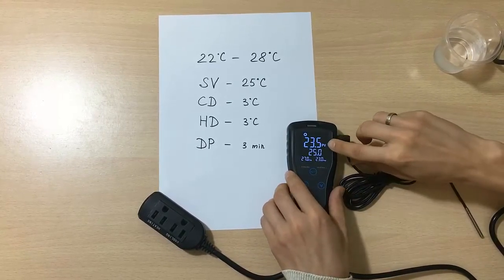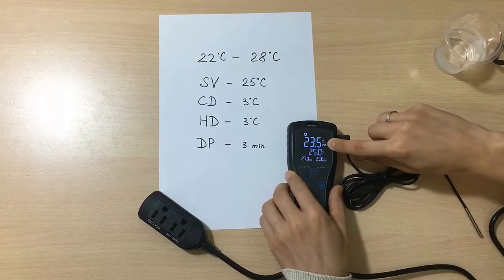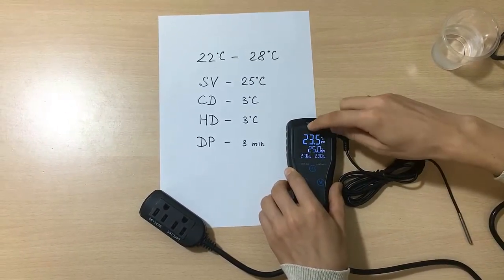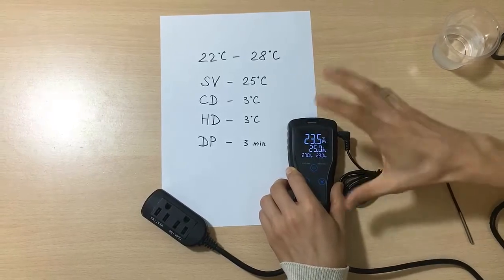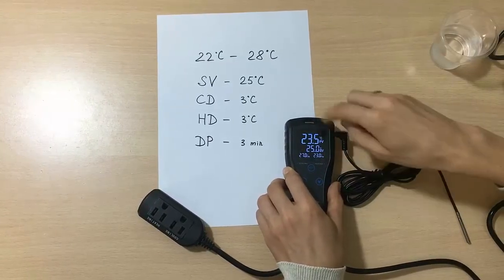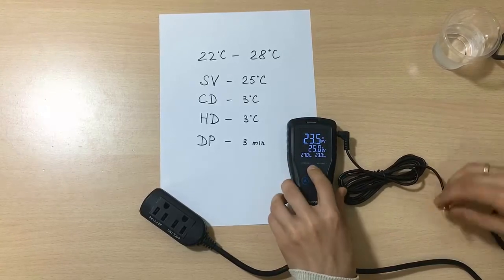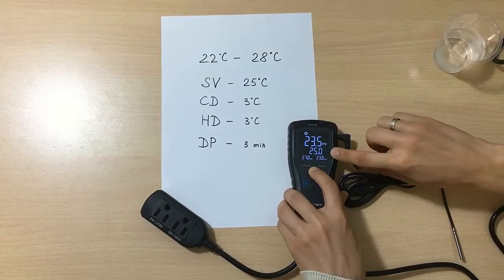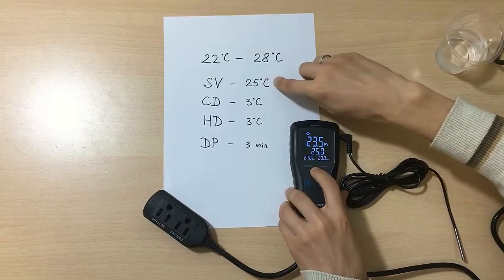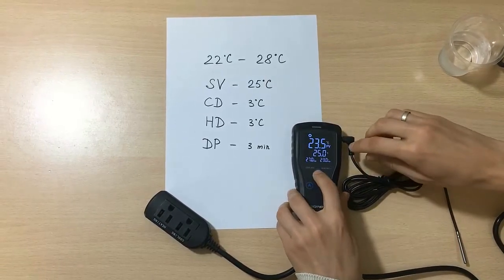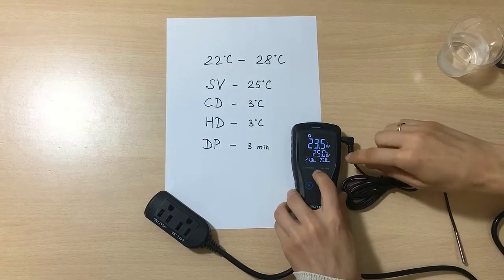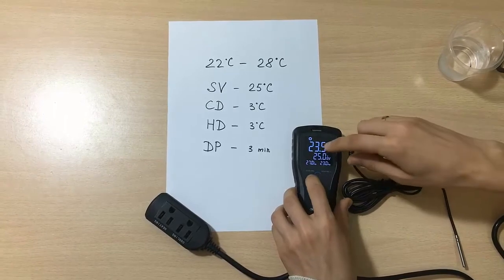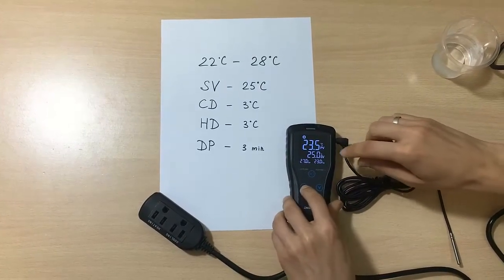So we can change any parameters that you want. First, the PV, as you know, is the temperature that we have right now, the actual temperature on the sensor. As you see, after 10 seconds when I don't do any changes, it automatically exits the setting mode. So I have to press it again. Let's change the SV, which is the set temperature. We have to press the set button and now we have the SV which is blinking here.